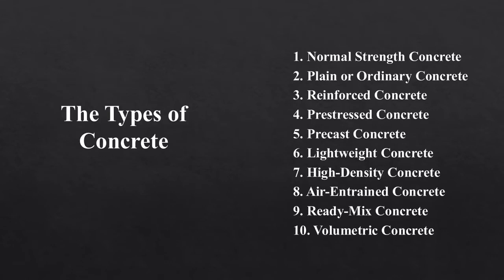There are many different types of concrete, some of which can be used for the same purpose. First is normal strength concrete, which combines the basic ingredients using a 1:2:4 proportion, normally used for pavements and buildings that do not need high tensile strength. Second is plain or ordinary concrete, which has the same proportion as normal strength concrete, and both do not stand well against vibrations and wind loadings.